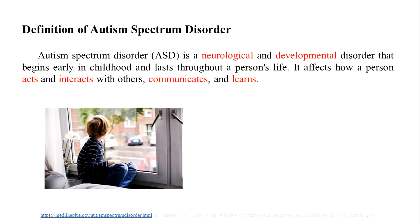To begin with, let's see the definition of autism spectrum disorder. Autism spectrum disorder is a neurological and developmental disorder, and we usually call it ASD for short. It causes children's social interaction and communication problems and lasts throughout a person's life.